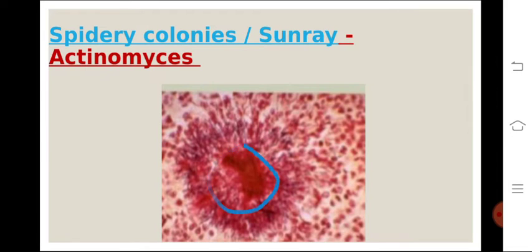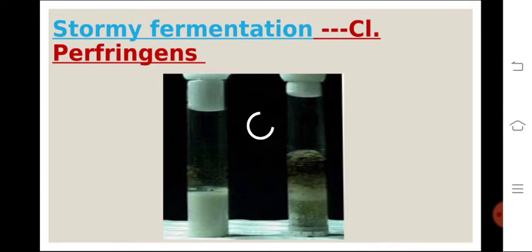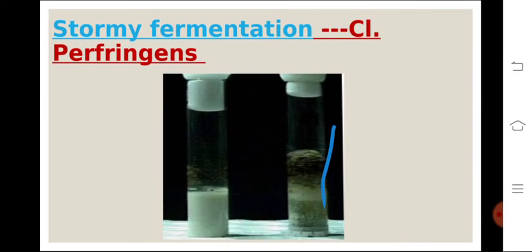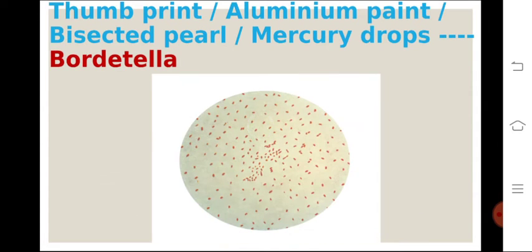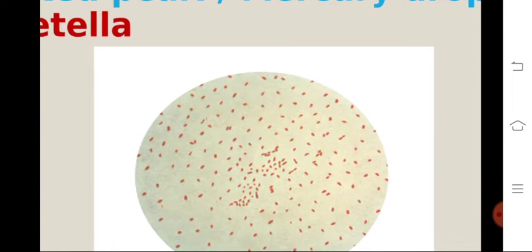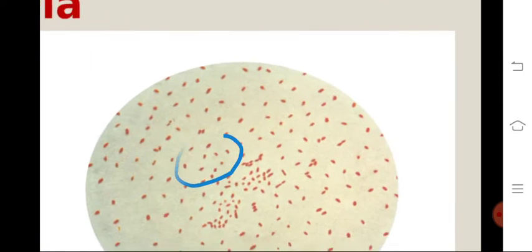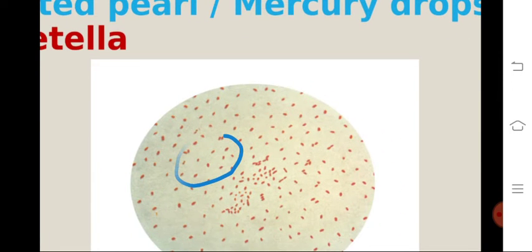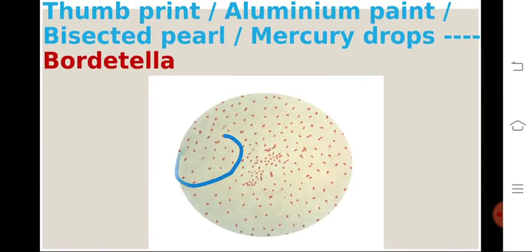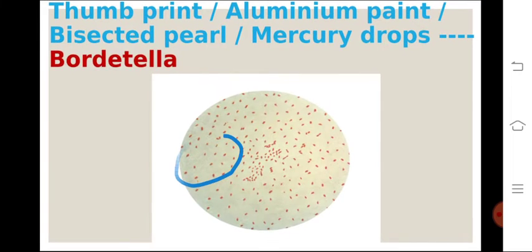This is the beautiful sunray appearance of Actinomyces. Here you can see Clostridium perfringens showing stormy fermentation. This is the thumbprint appearance of Bordetella — you can see small Bordetella organisms in the shape of a thumbprint. So thumbprint, aluminium paint, bisected pearl, and mercury drops are all associated with Bordetella.